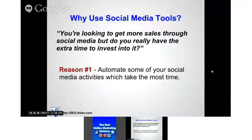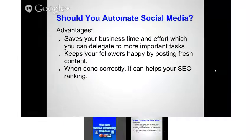The number one reason we use these social media tools is to automate some of our activities that take the most time. It's important to understand the advantages and disadvantages of automating social media. The advantages are obvious: it saves time and effort, you can delegate tasks to automatically post out, it keeps your followers happy because it appears like you're posting fresh content, and when done correctly it can help your SEO ranking.